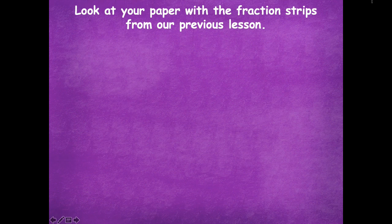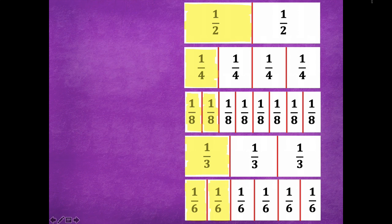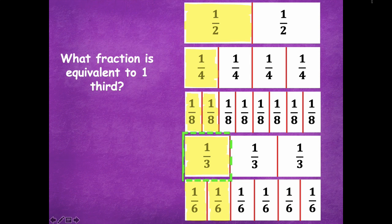Look at your paper with fraction strips from our previous lesson — here's what it should look like. What fraction is equivalent to one-third? Here's one-third. What fraction would be equivalent to that? Yeah, two-sixths. See how they have the same amount of space on our one whole for each fraction strip?